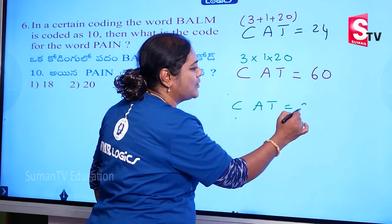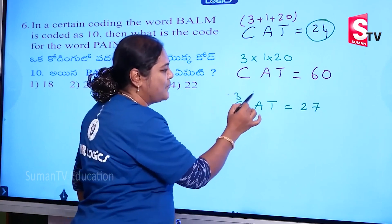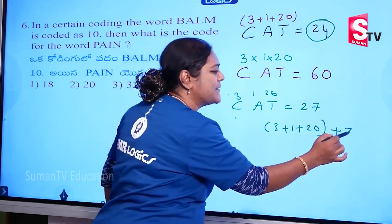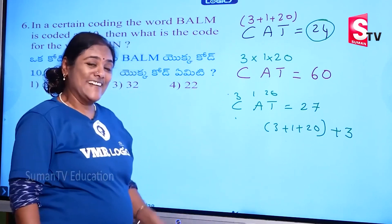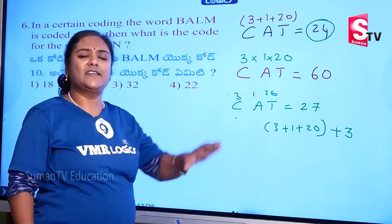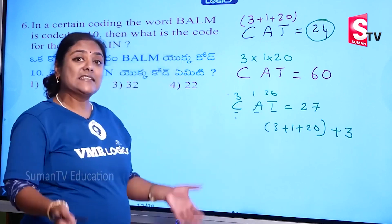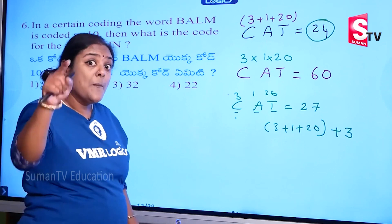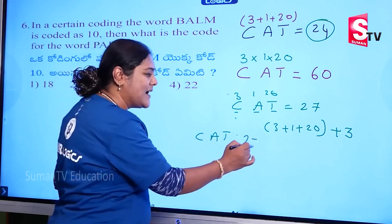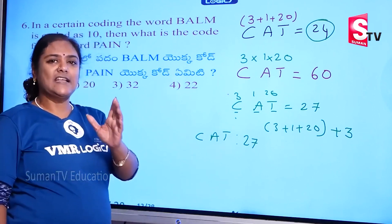Now, CAT is equal to 27. C=3, A=1, T=20. But 3+1+20 equals 24, not 27. Why? We need a constant number — checking sum of values. A cube: 3 cubed equals 27. So the logic here is 'cube of number of letters': 3 letters cubed = 27. Always check a minimum of two examples to confirm the logic is the same for both.